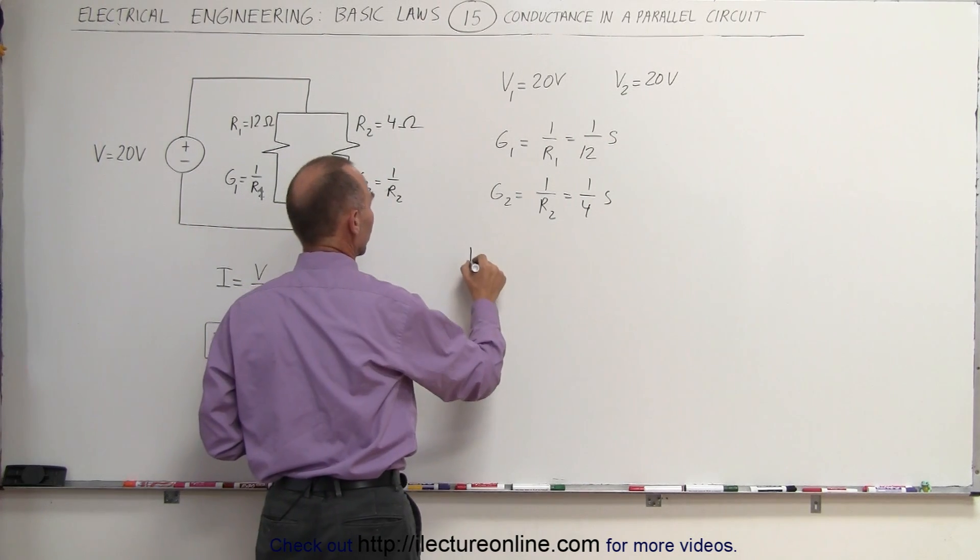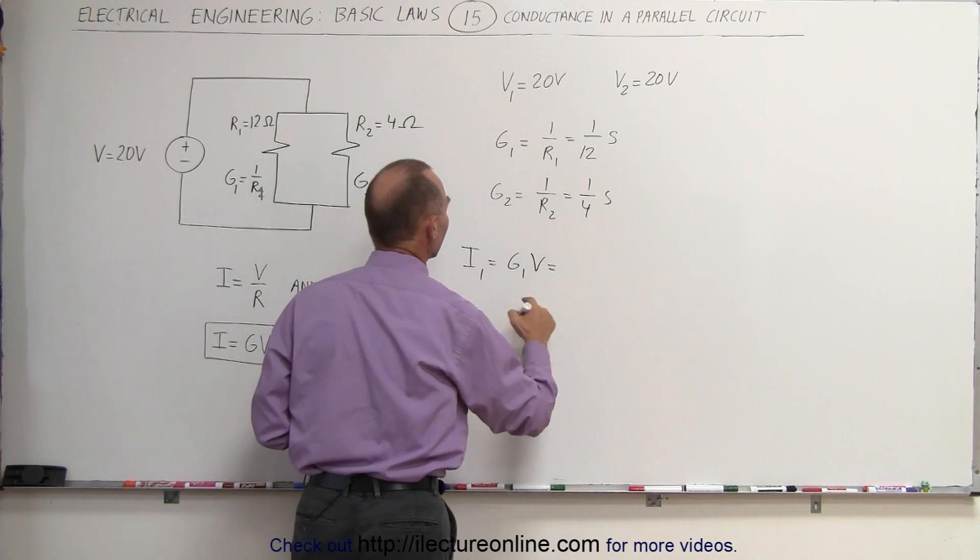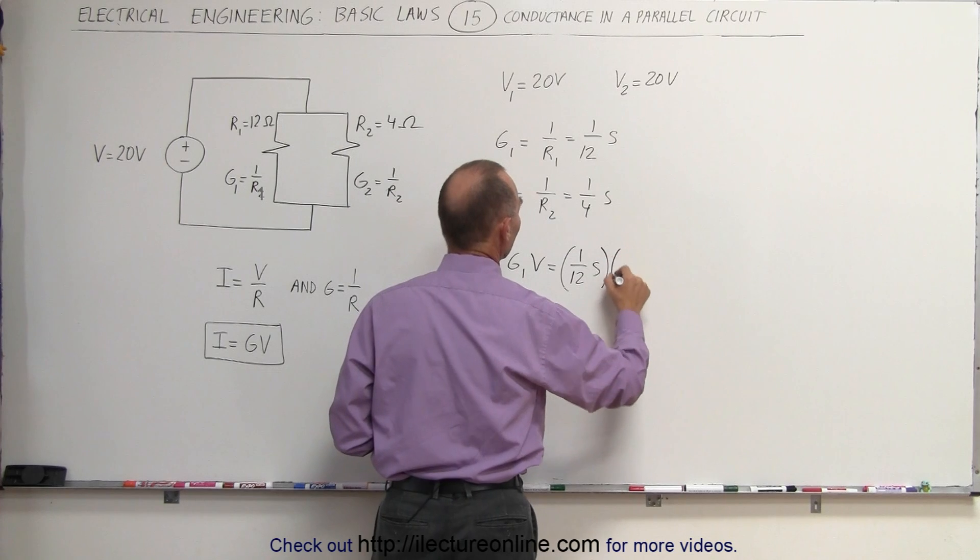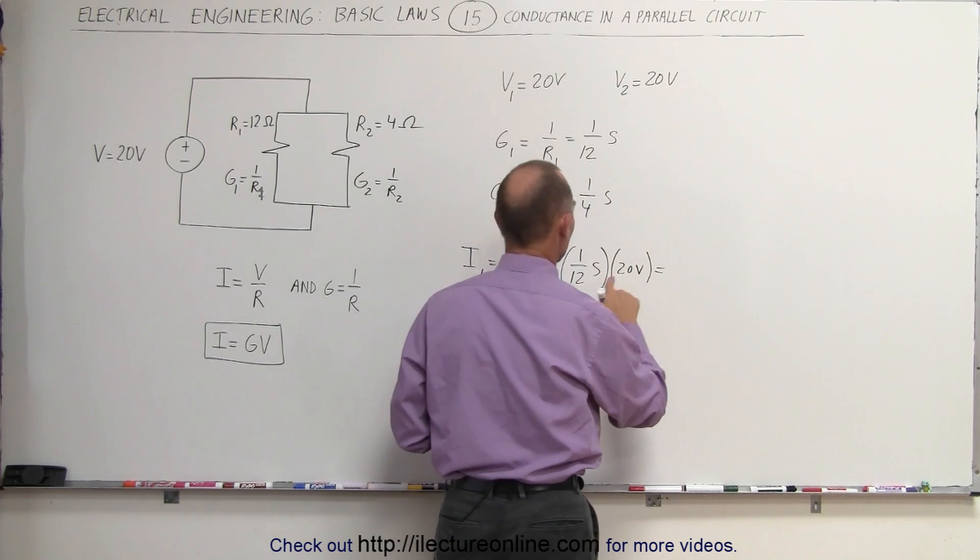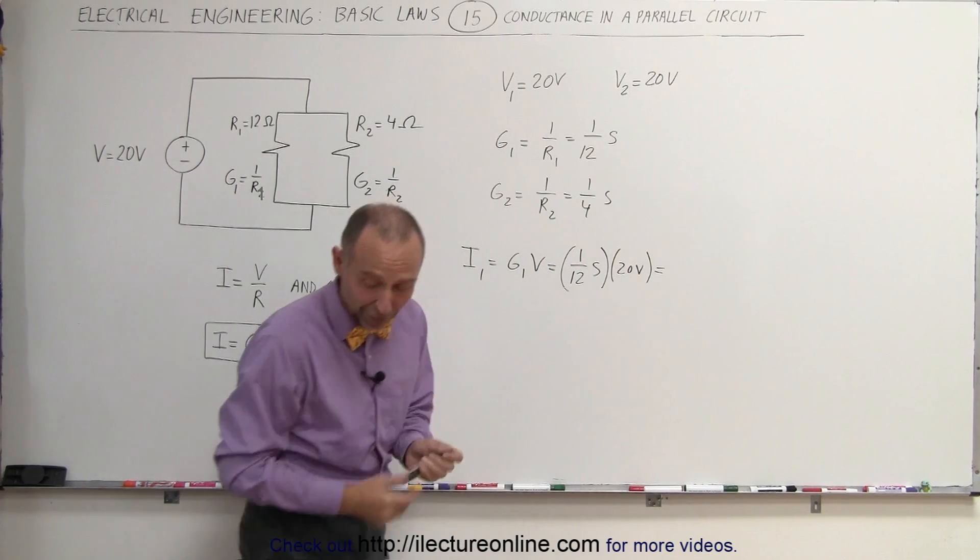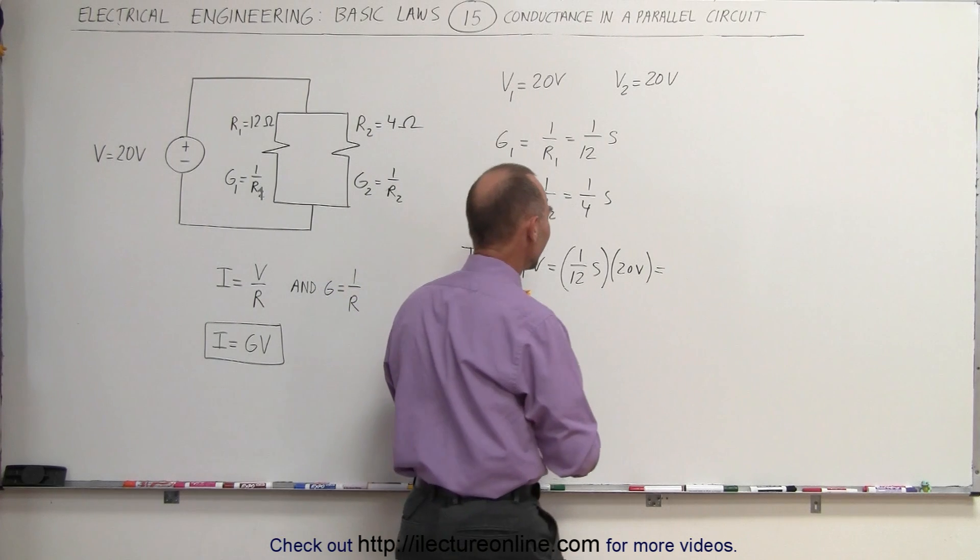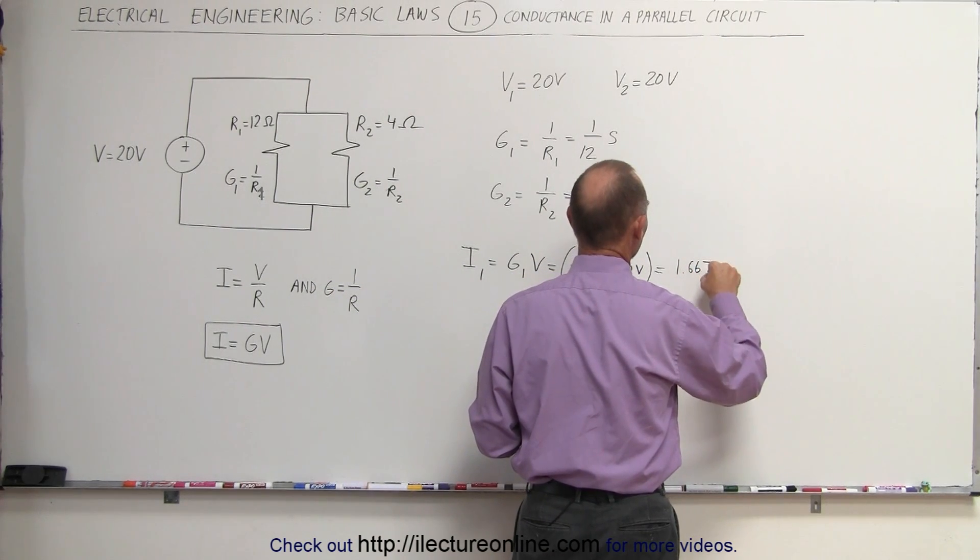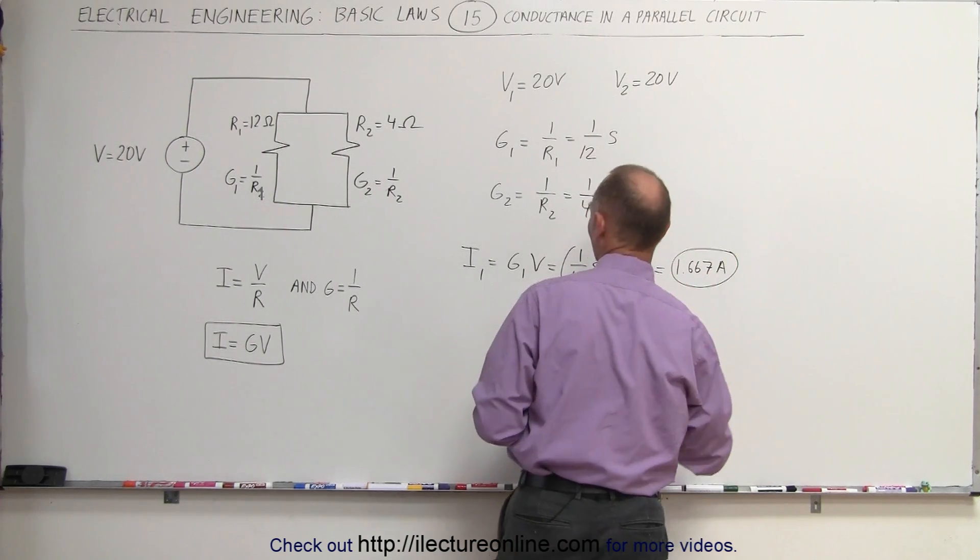Which means that the current in the first branch is equal to G1 times V. In this case, G1 is 1 over 12 Siemens times V, which is 20 volts. 20 divided by 12 is 1.667 amps. I'll do it to three decimal places. So that's the current in the first branch.